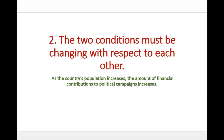Number two: the two conditions must be changing with respect to each other. Here's another example — as a country's population increases, the amount of financial contributions to political campaigns increases. We don't know if that is true or not, but that could be an example of two conditions changing at rates that affect each other.